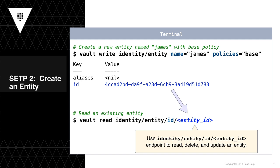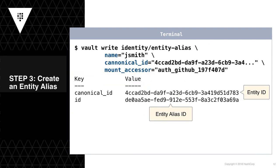We can inspect any existing entities by running the command 'vault read' against the endpoint identity/entity/id and the entity ID of the entity we are interested in. In step three, we'll create our entity alias by running the command 'vault write' against the endpoint identity/entity-alias, passing in the alias name parameter — in this case jsmith — the canonical ID set to the entity ID established in step two, and the mount accessor set to the value we inspected using the jq utility in step one. Running this command will create an entity alias for jsmith connected back to the entity James, as both identities are for the same person.